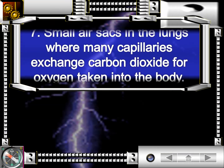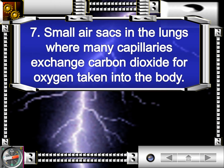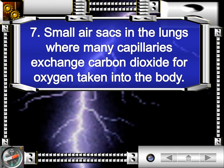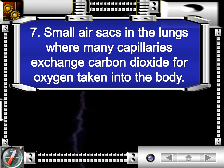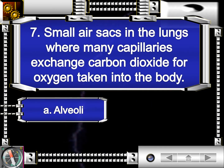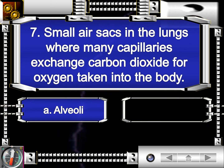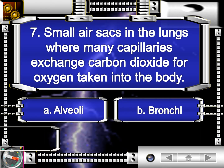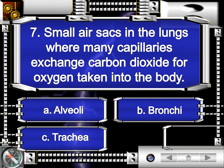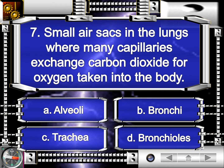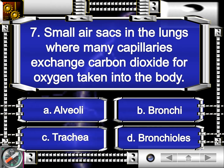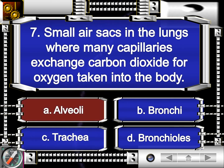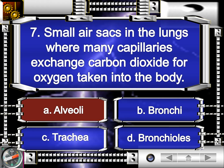Question number seven. Small air sacs in the lungs where many capillaries exchange carbon dioxide for oxygen taken into the body. Letter A, alveoli. Letter B, bronchitis. Letter C, trachea. Or letter D, bronchioles. The answer is letter A, alveoli.